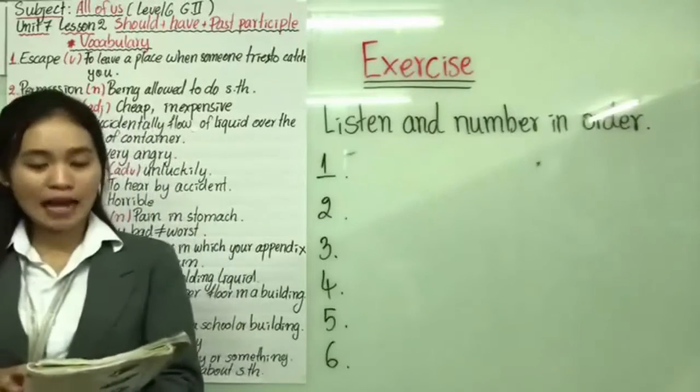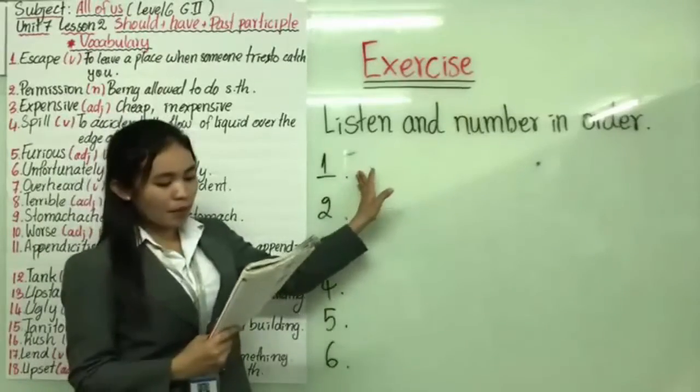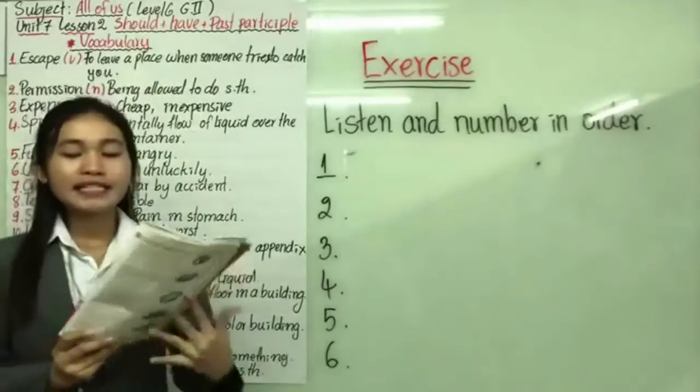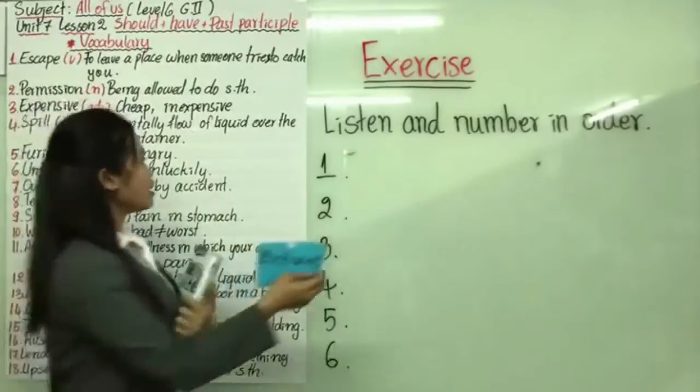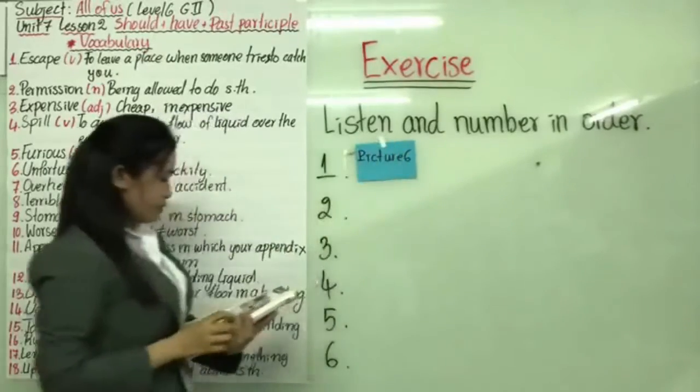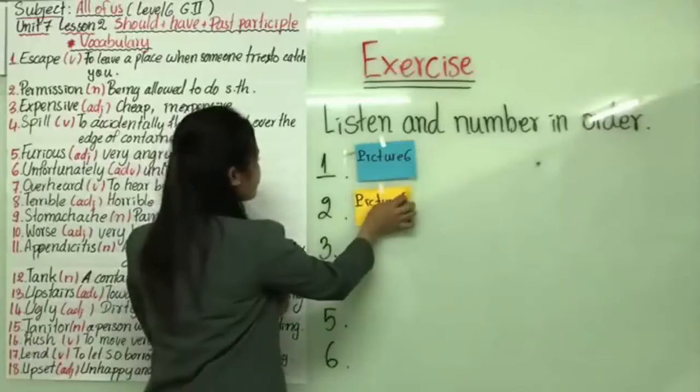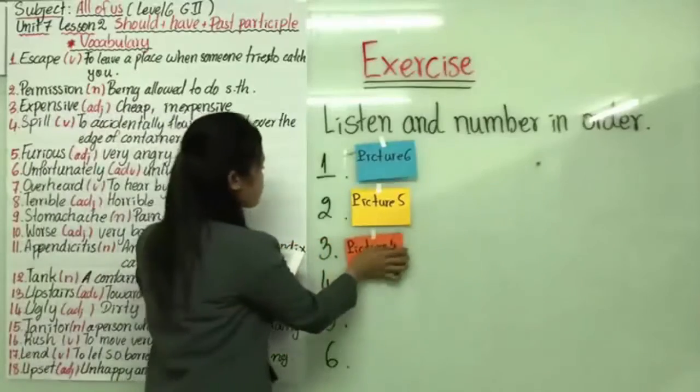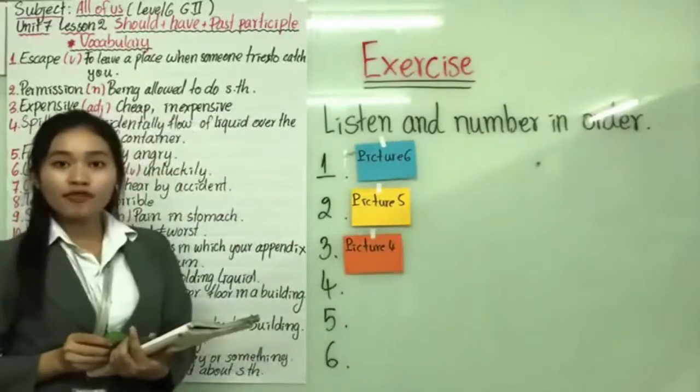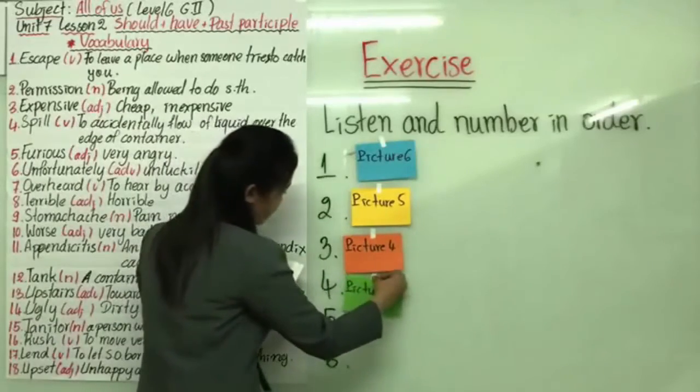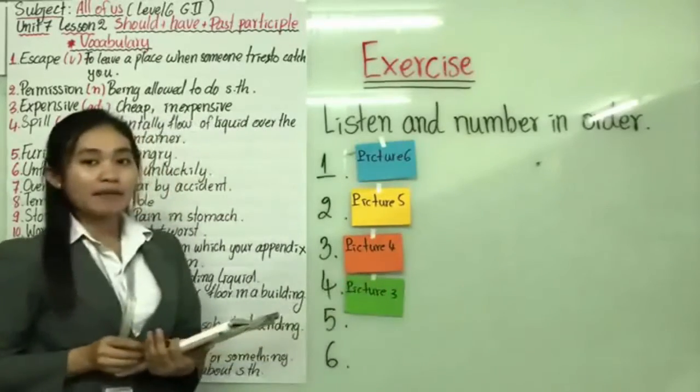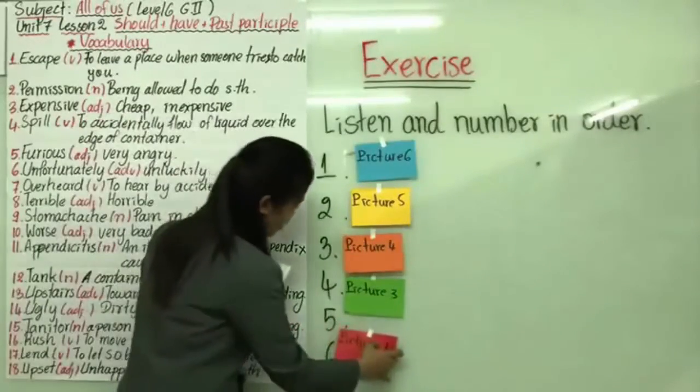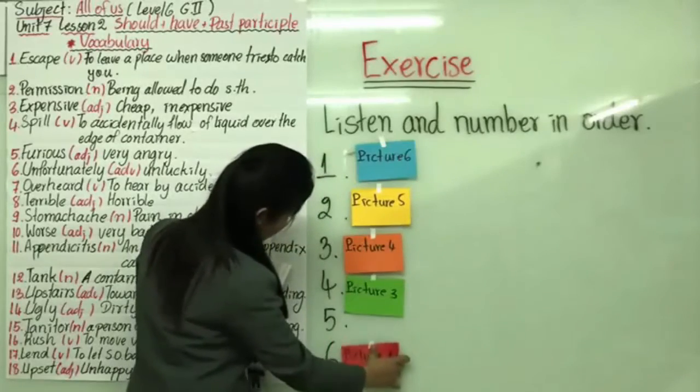So now it's time to put in order from number one to number six according to the six pictures that you have seen. So the first picture in order number one is picture number six. And order number two is picture number five. Order number three is picture number four. Order number four is picture number three. Order number five is picture number two. And the last order is picture number one.